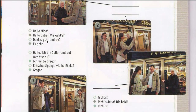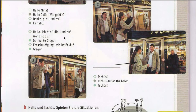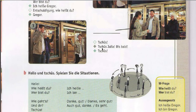Picture number two: 'Hallo Nina. Hallo Julia. Wie geht's? Danke, gut. Und dir? Es geht.' Then: 'Hallo, ich bin Julia. Und du? Wer bist du? Ich heiße Gregor. Entschuldigung, wie heißt du? Gregor.' They are saying goodbye: 'Tschüss. Tschüss, Julia. Bis bald. Tschüss.' — Bye. See you later.